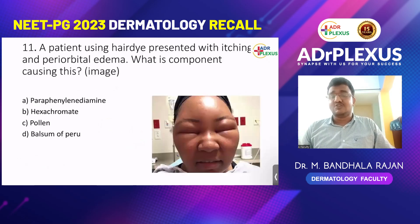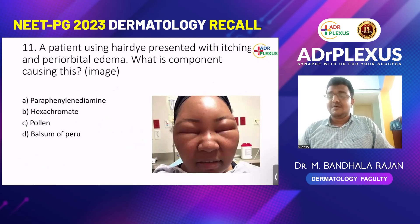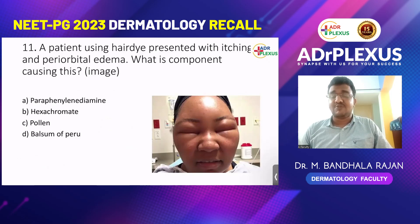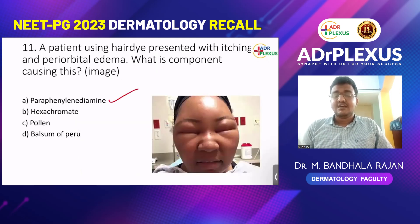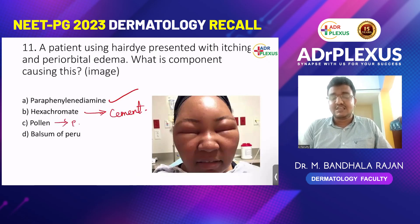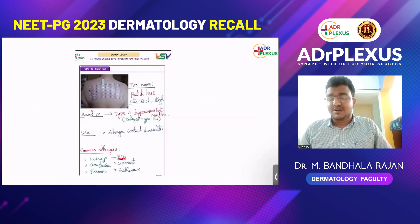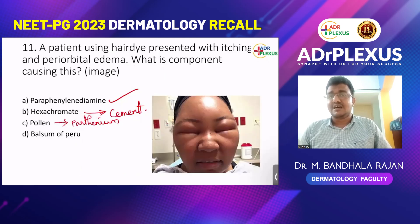Other topics: a patient using hair dye presented with itching and periorbital edema. An image was given showing periorbital edema. Options: para-phenylenediamine (PPD), hexavalent chromate, pollen, balsam of Peru. The allergen present in hair dye is PPD, para-phenylenediamine. Hexavalent chromate is commonly present in cement; pollen causes allergy in farmers. The answer is PPD.